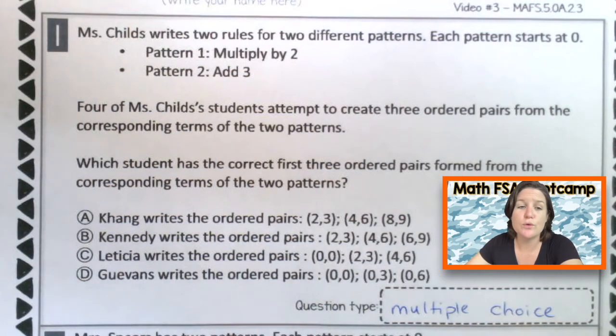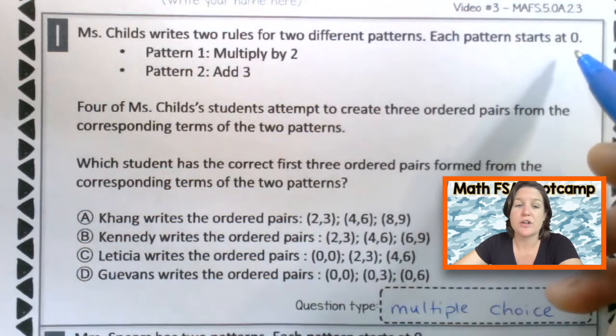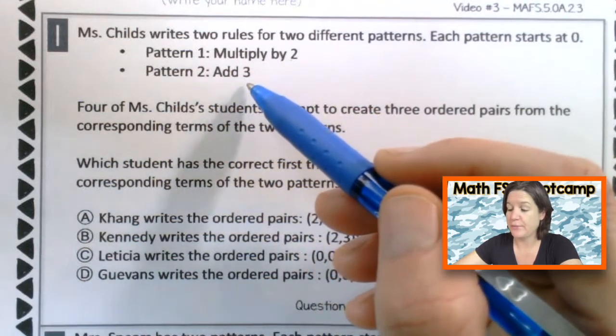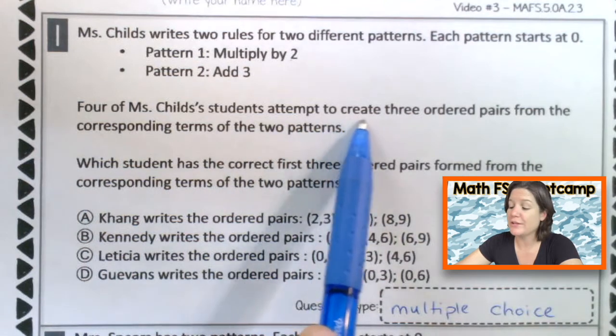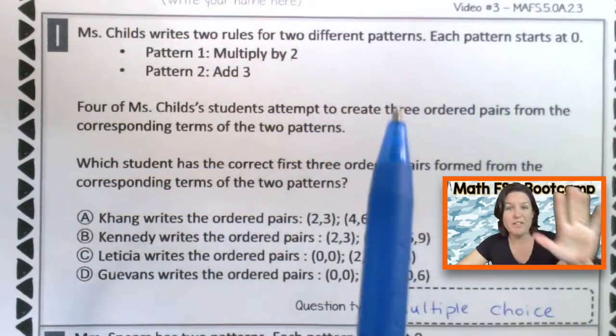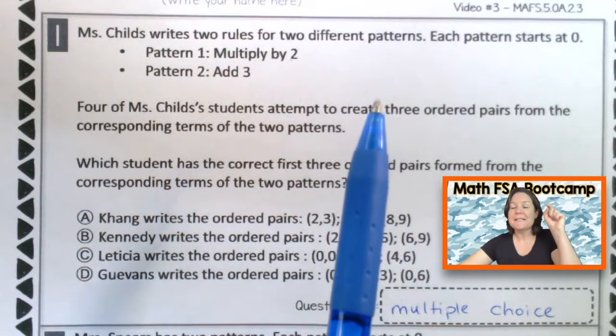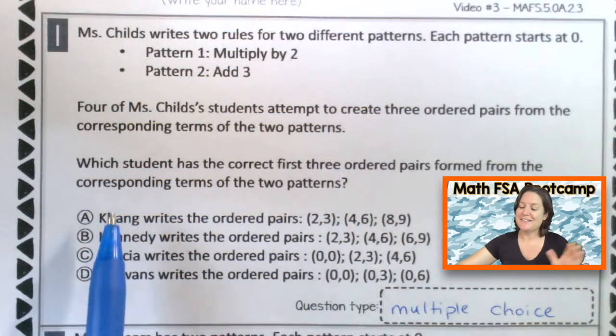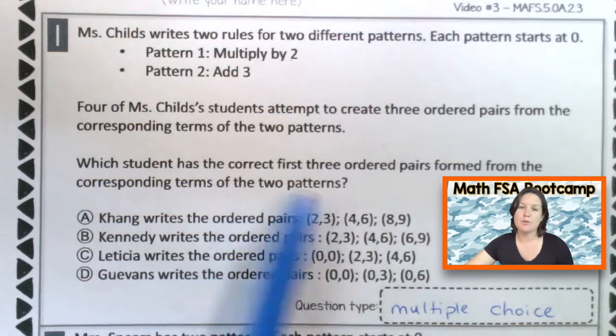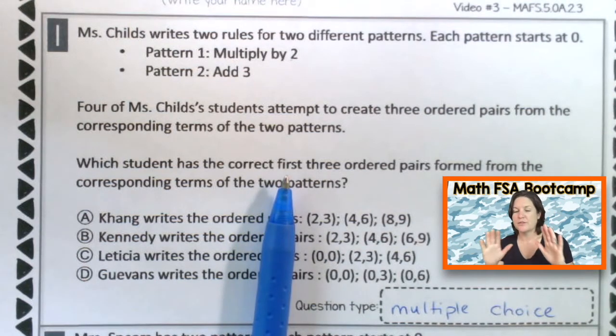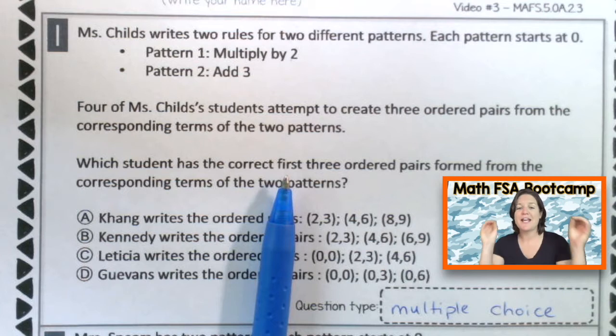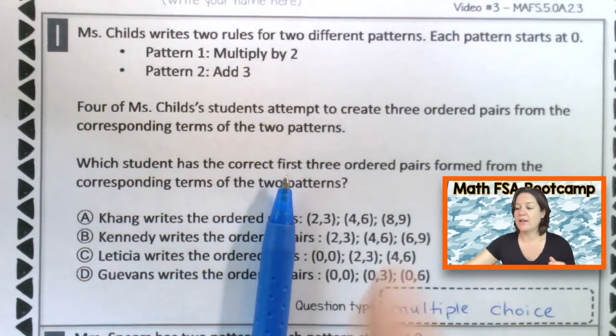Okay. Ms. Childs writes two rules for two different patterns. Each pattern starts at zero. The first pattern says multiply by two. Pattern number two is add three. Then four of Ms. Childs students attempt to create three ordered pairs from the corresponding terms of the two patterns. Oh my gosh, there's so many words. We've got this. So everybody say, I've got this. I'm going to stick with it until I get it. All right. And this says, which student has the correct first three ordered pairs formed from the corresponding terms of the two patterns. There's a lot of words there. So what do we need to do? We're going to read it slowly. We're going to read one sentence at a time. We're going to mark up our text and draw it out, model it in any way that we can until it makes sense.